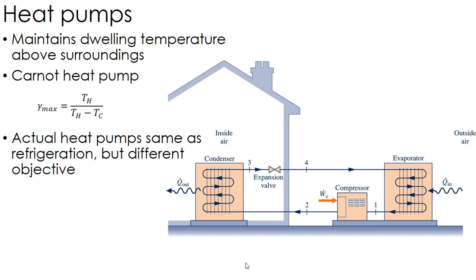But it is exactly the same system with an evaporator, condenser, compressor and expansion valve. This time Q_out is what is important to us, so the coefficient of performance is Q_out over the power input to the compressor, rather than Q_in over the power input to the compressor.